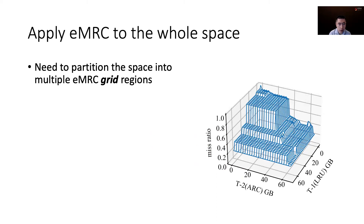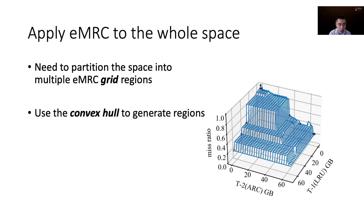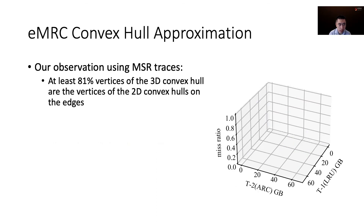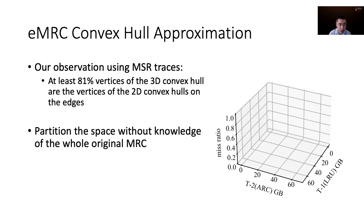Now we know how to remove cliffs in a given region, we need to effectively partition the space into multiple such regions. Similar to Talos, we found the convex hull is a good reference to generate grid regions for multi-tier caching. We can first generate the convex hull and then use it as a reference to generate grid regions for cliff removal. However, this approach still requires the original MRC as input, which is time consuming to generate. Based on our evaluation of MSR IO traces, we found that at least 81% of the vertices in the 3D convex hull are the vertices of the 2D convex hulls on the edges. Based on this finding, we can now partition the space without knowledge of the whole original MRC.